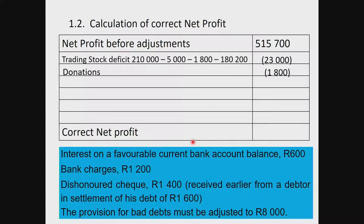The next adjustment is interest on a favorable balance, also called interest received or interest income. This appears in the statement of comprehensive income separately from normal income or expenses. The 600 rand will increase my profit, so we record it without brackets. The line item can be called either 'interest on favorable current balance' or 'interest income.'